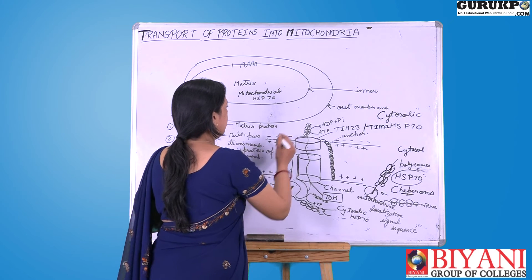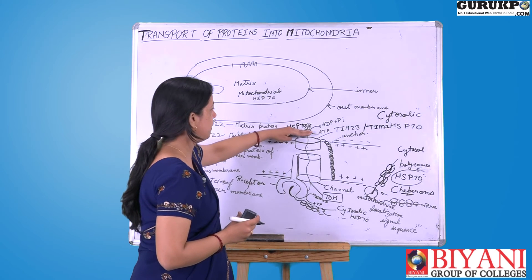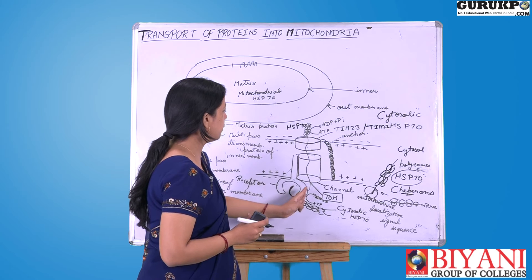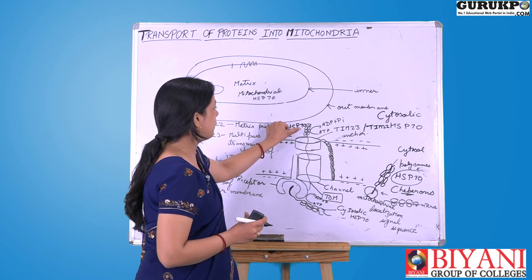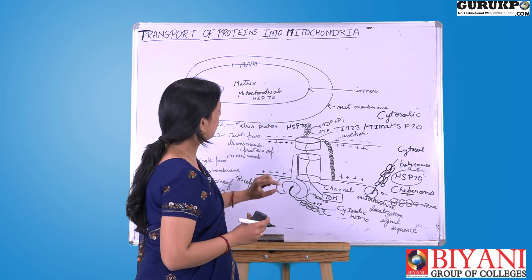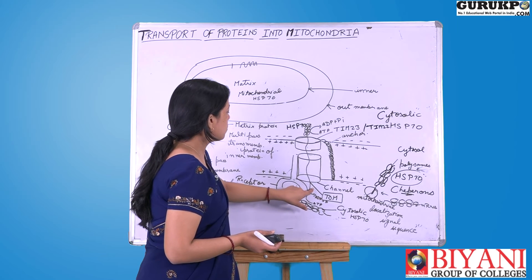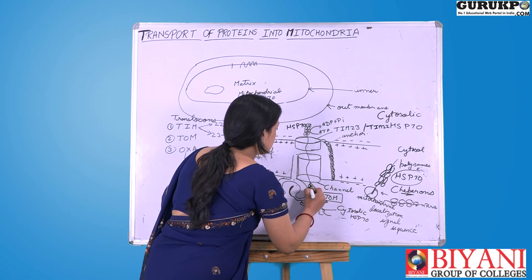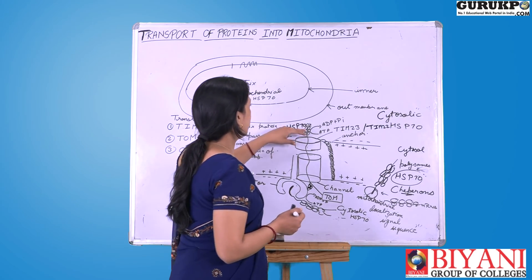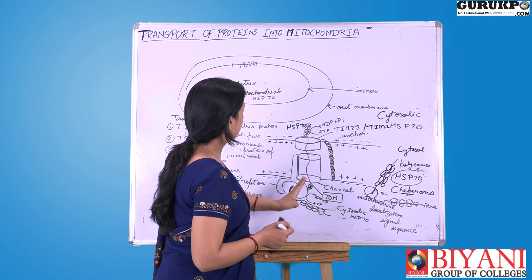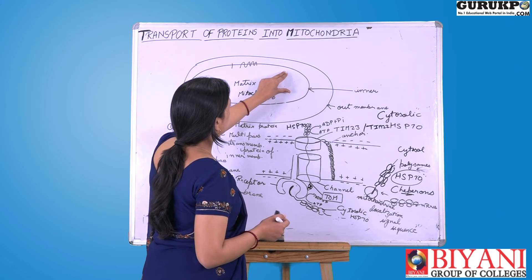Another HSP70 is present here — the mitochondrial HSP70. Once the protein has been transported through the TOM channel and then through the TIM channel, mitochondrial HSP70 binds to the protein for proper folding. An anti-clockwise movement occurs, and this anti-clockwise movement helps in the transport of the protein through these channels in a rope-like manner.